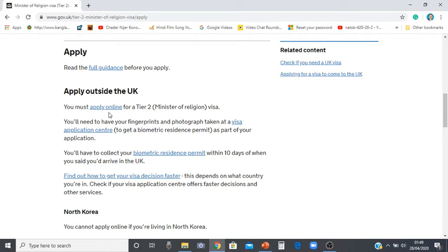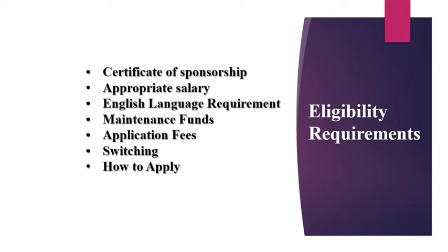In section 5, you need to pay the Home Office fee and the NHS fee. In section 6, you submit the application and print the application form, then make an appointment with the embassy. At your appointment, you need to submit all relevant documents including your passport, Certificate of Sponsorship, B2 English language certificate, bank statement, any expired passport, and if required, a medical certificate for a TB test.